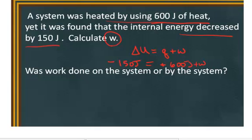So we're solving for W. So in this case, I'm just going to keep going down this way. W equals negative 150 joules minus 600 joules equals a negative 750 joules.